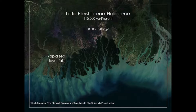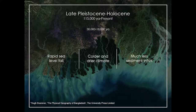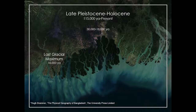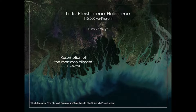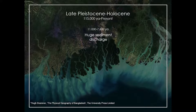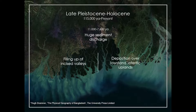Rapid sea level fall occurred from 30,000 to 18,000 years ago. The climate became colder and drier, so the sediment influx was much less. 18,000 years ago, after the last glacial maximum, the sea level started to rise slowly and a relatively significant sediment load was found. About 11,000 years ago, the monsoon climate resumed and it forced huge river sediment discharge.